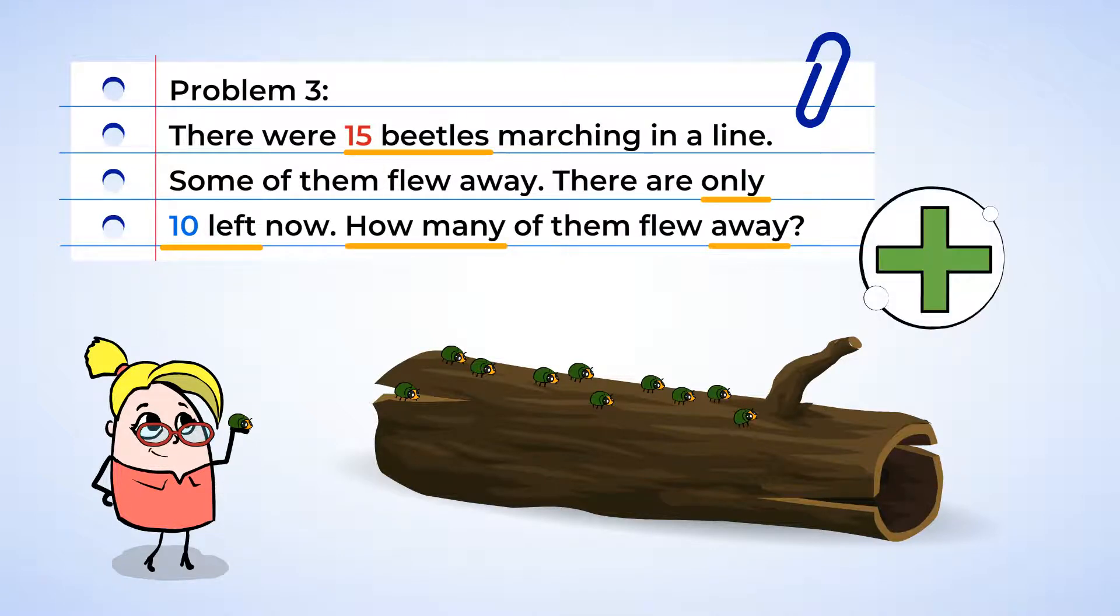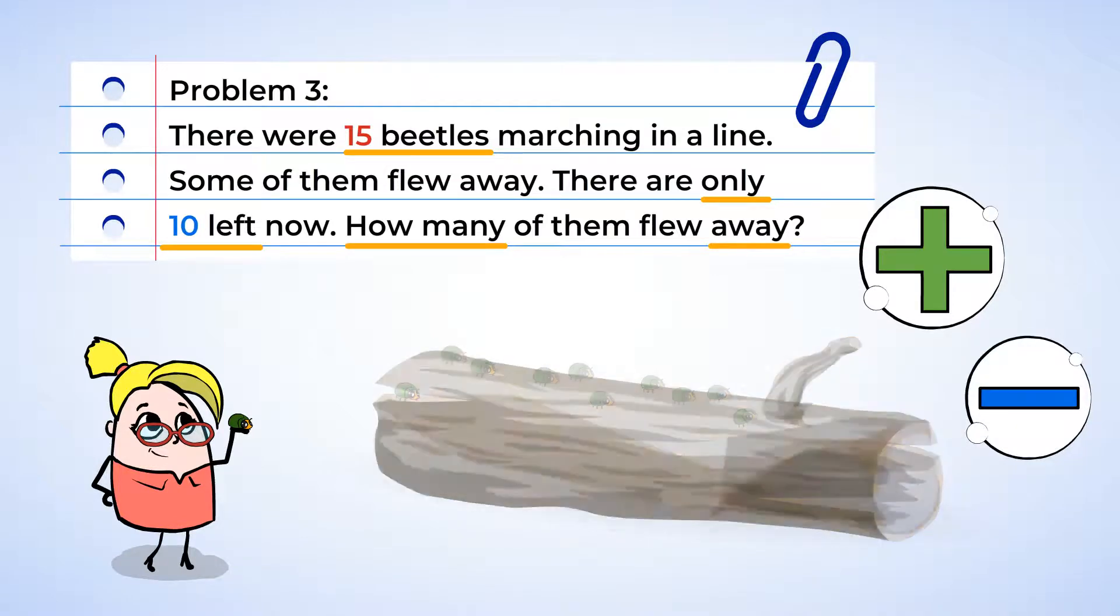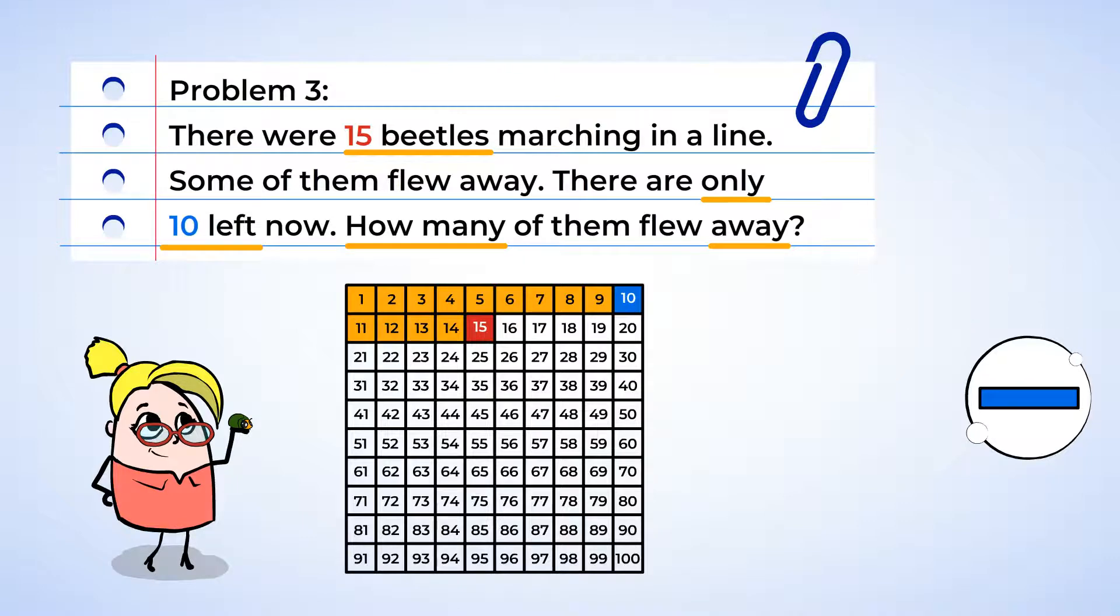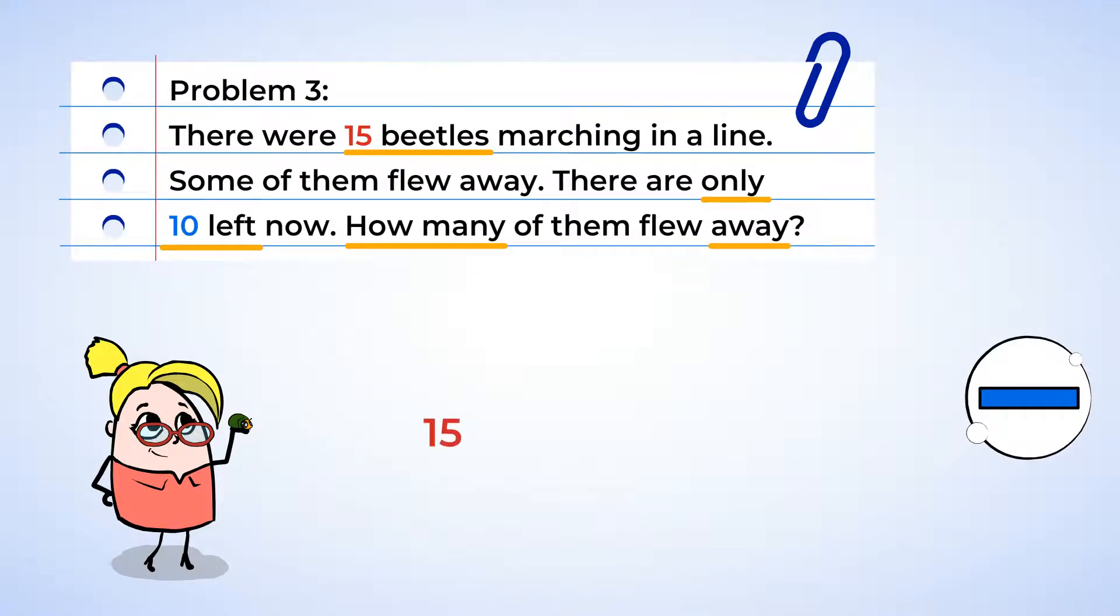Do you think we should make an addition sentence or a subtraction sentence? We can decide by asking ourselves, did the number of beetles get bigger or smaller? We can see it got smaller, and so that means we need to make a subtraction sentence. The number of beetles was fifteen, but then it got smaller. So the first number should be fifteen, followed by the minus sign.